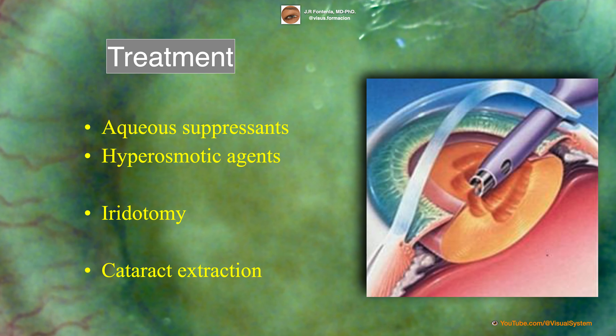Initial treatment is directed at lowering the intraocular pressure with aqueous suppressants or hyperosmotic agents. Depending on the degree of corneal edema, laser iridotomy is often recommended, also in the fellow eye if it is anatomically predisposed to angle closure glaucoma. Once intraocular pressure and inflammation are under control, definitive treatment with cataract extraction should proceed.